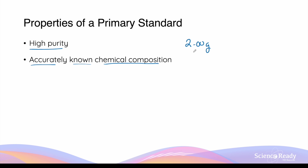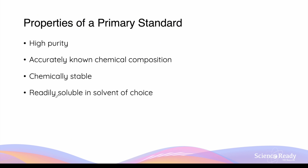By definition, a standard solution should have an accurately measured concentration, so only chemicals with high purity and an accurately known composition should be made into a primary standard. The primary standard should also be chemically stable when made into a solution, and it should be readily soluble in a solvent of choice — most commonly distilled or deionized water.